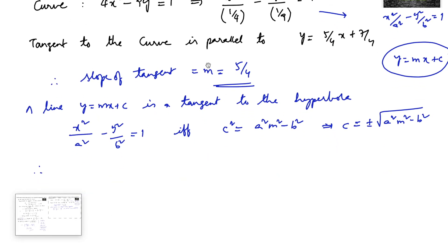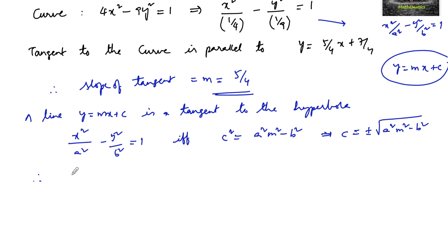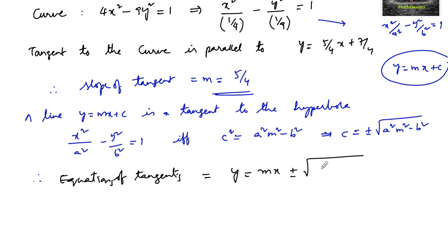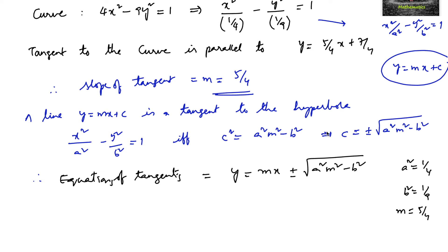Therefore, the equations of tangents to the given hyperbola can be written as y = mx ± √(a²m² − b²). Comparing the given hyperbola with the standard form, a² = 1/4 and b² = 1/9, and the slope m = 5/4, which is parallel to the given line.